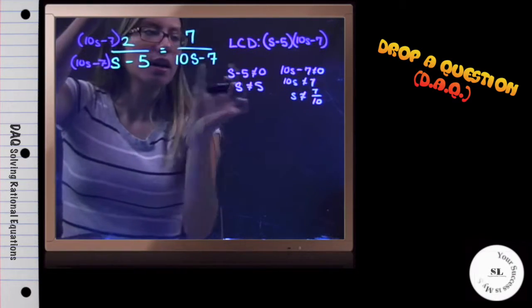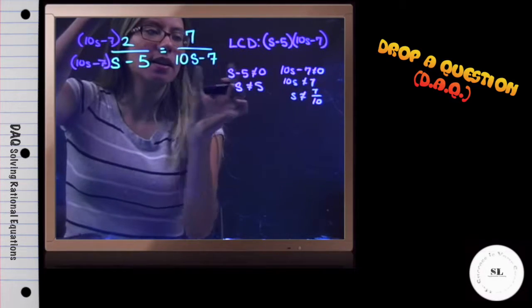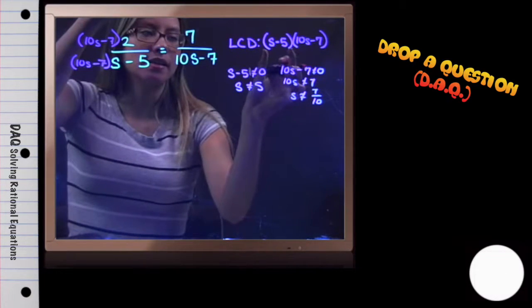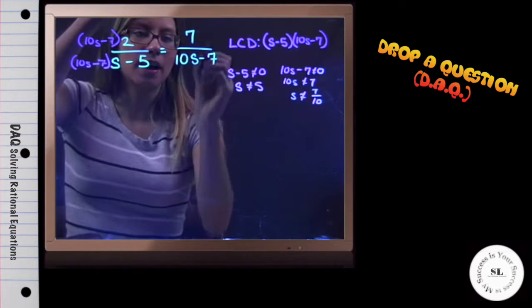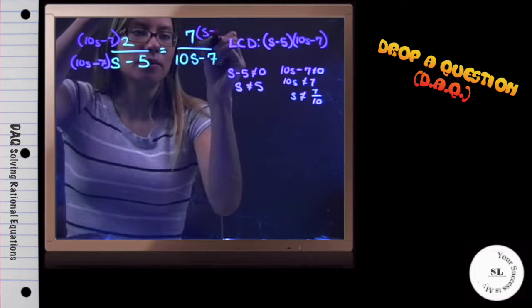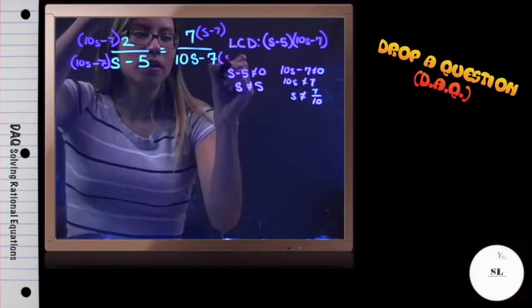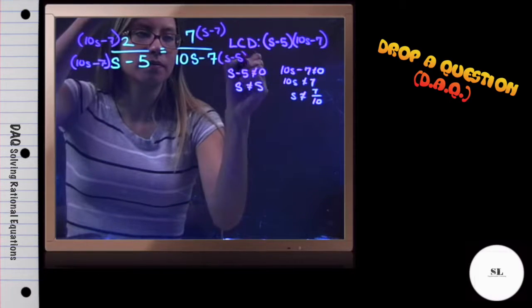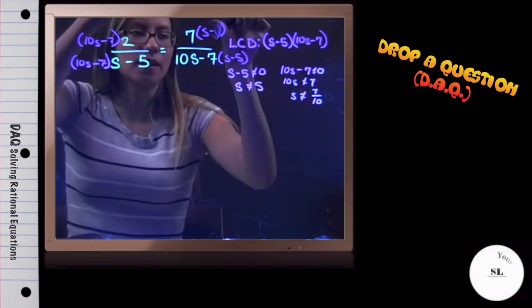Then for the second, I have 10s minus 7, but the LCD says it also needs to have s minus 5. So that group I am going to multiply to the numerator and denominator. I wrote 7. This should have been a 5.